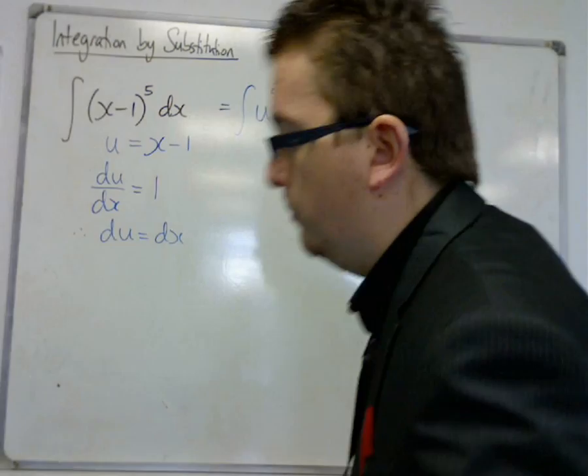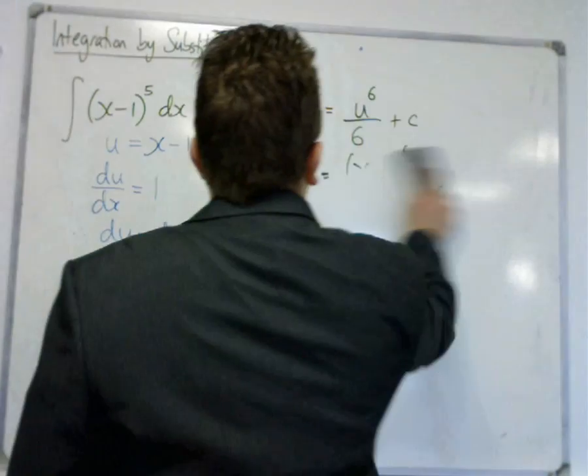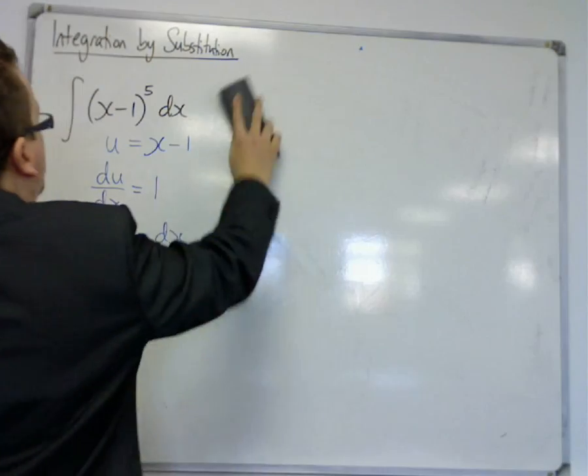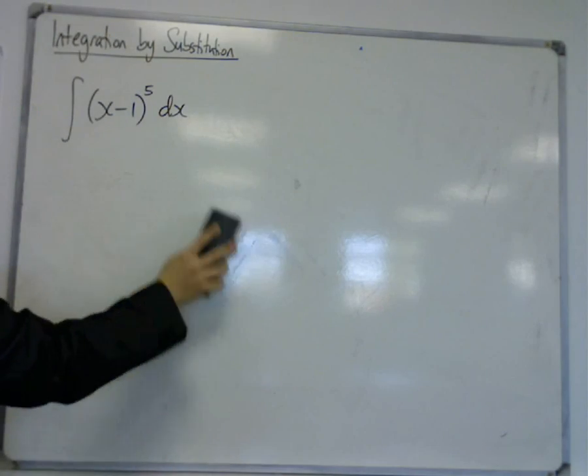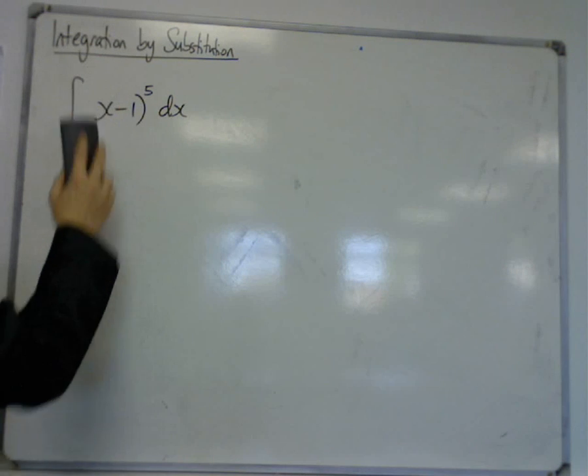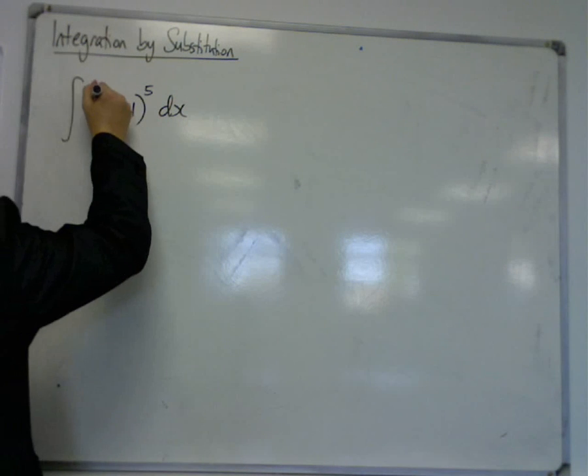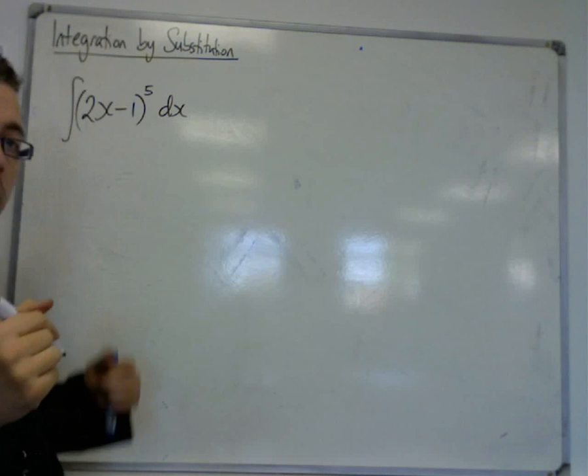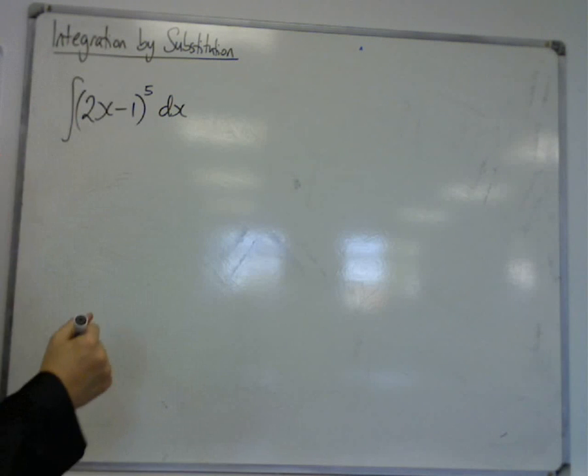Let's look at a couple more examples of this. I'm going to do a similar one here, and all I'm going to do is just change it to ∫(2x-1)^5 dx.